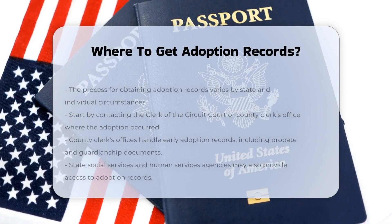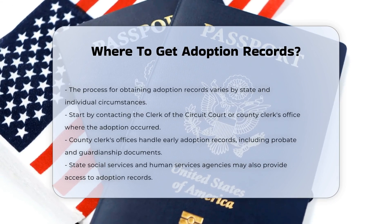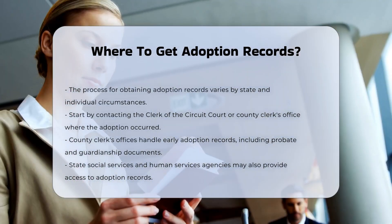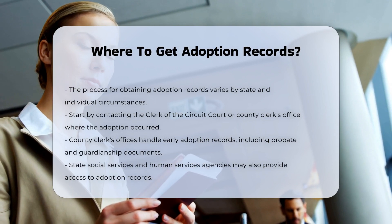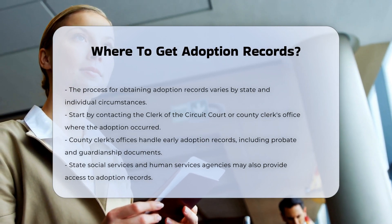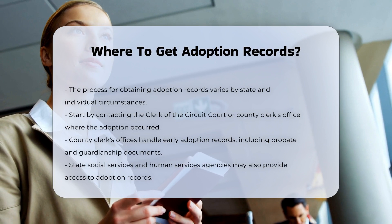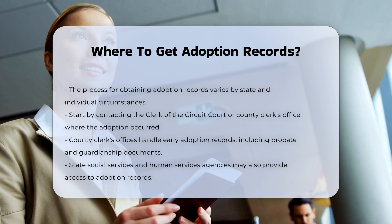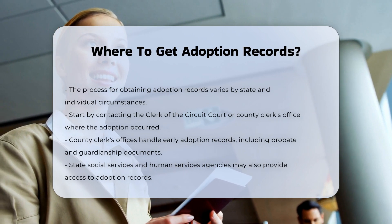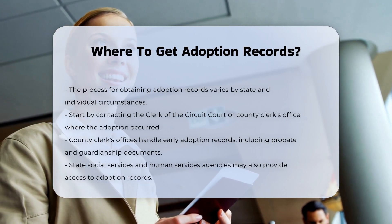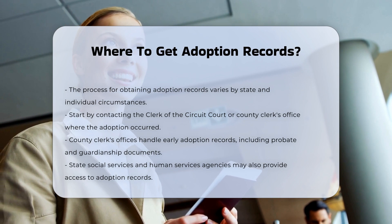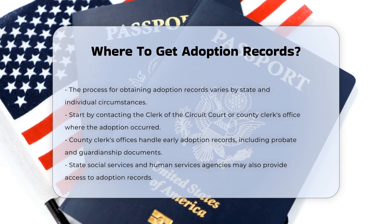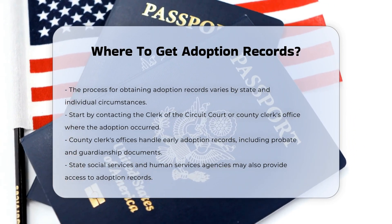If you are an adoptee looking to obtain your adoption records, the process can vary depending on the state and the specific circumstances of your adoption. Start by contacting the Clerk of the Circuit Court or the County Clerk's Office in the county where your adoption took place. This office typically handles early adoption records, including probate and guardianship records.